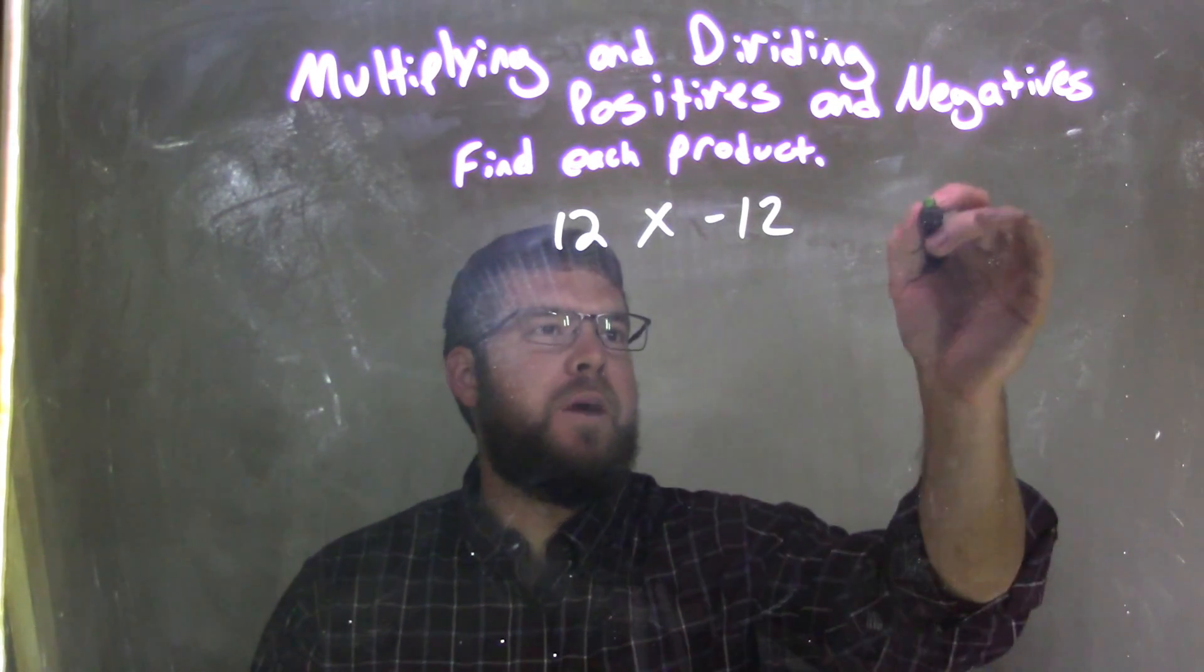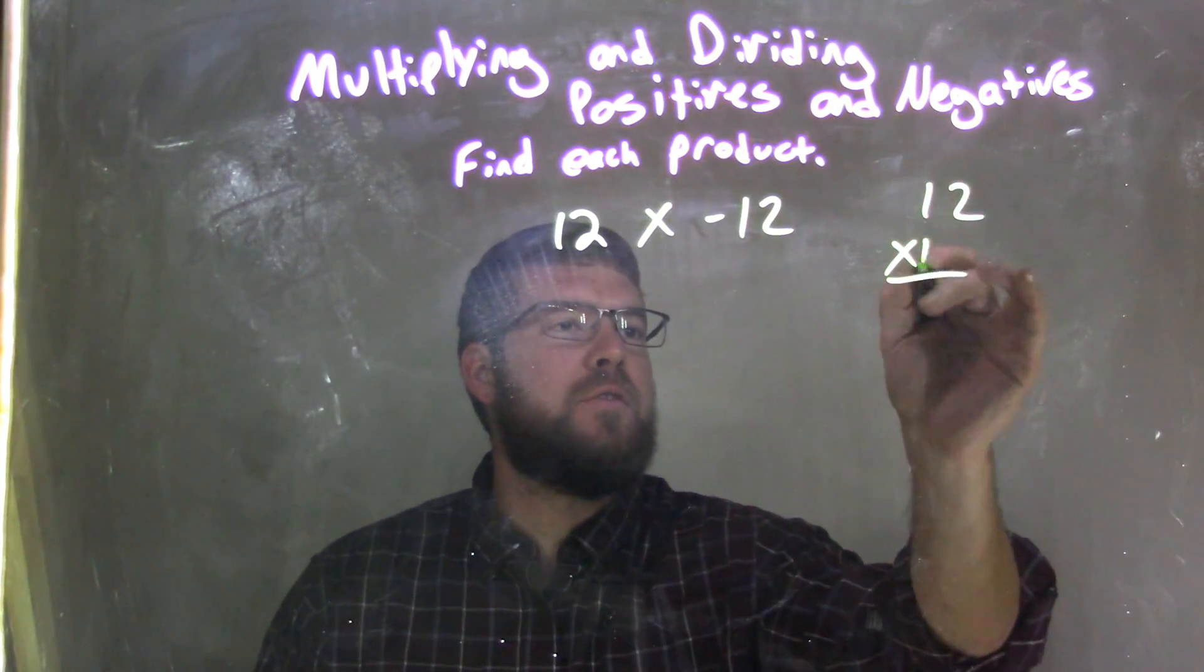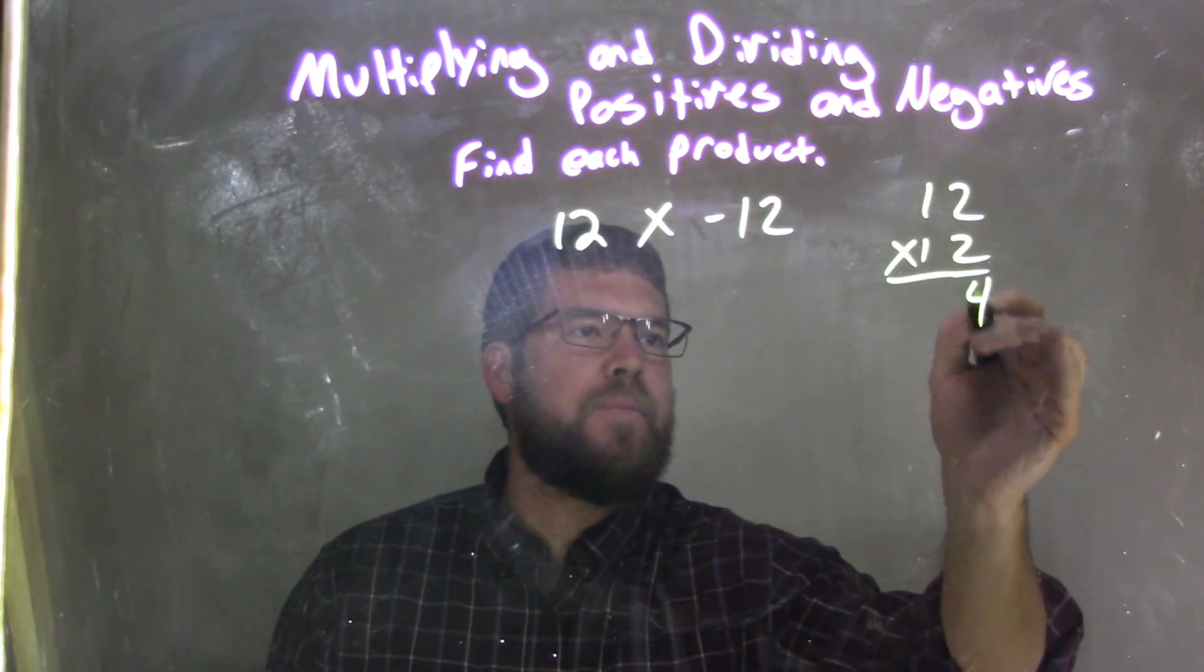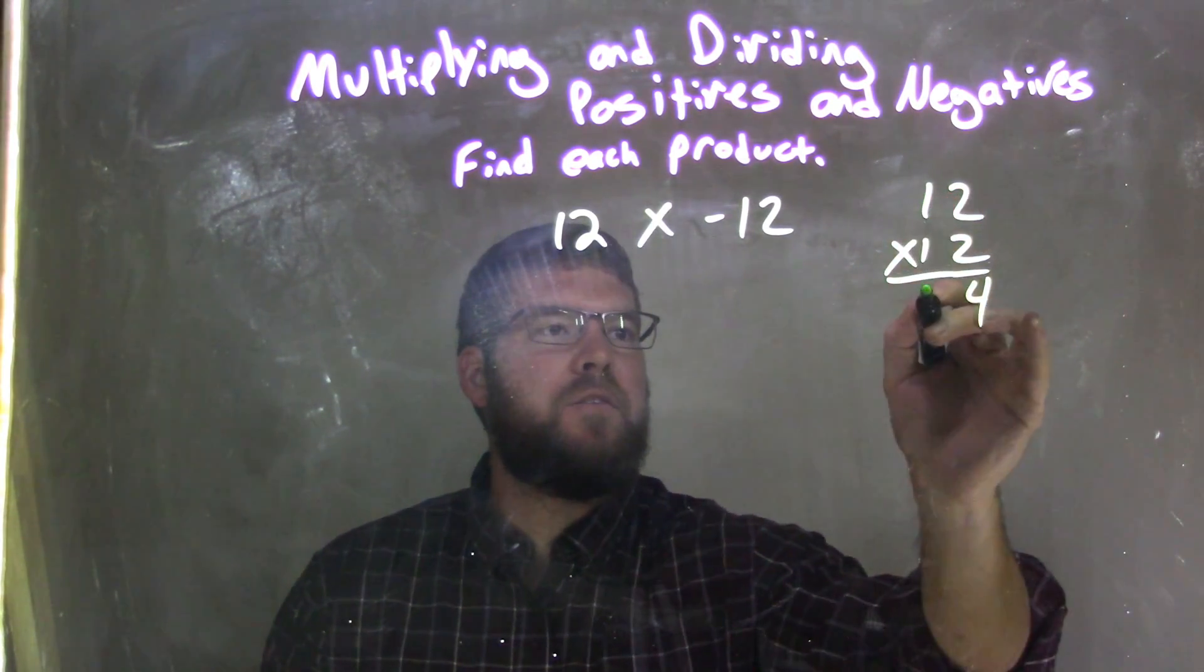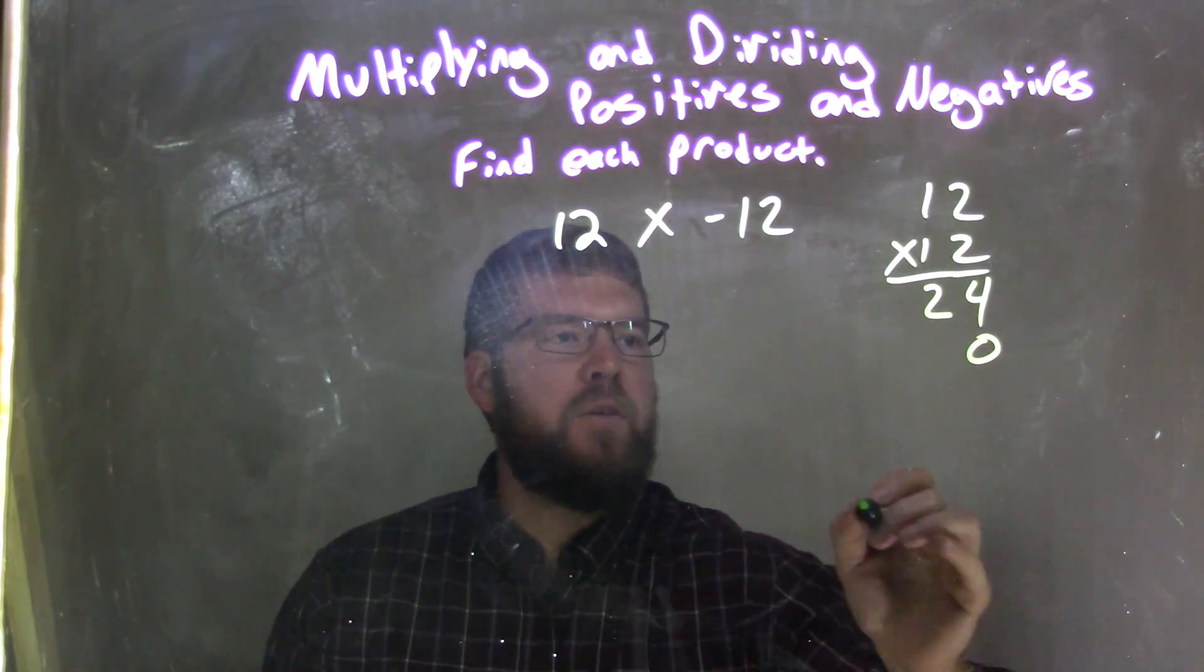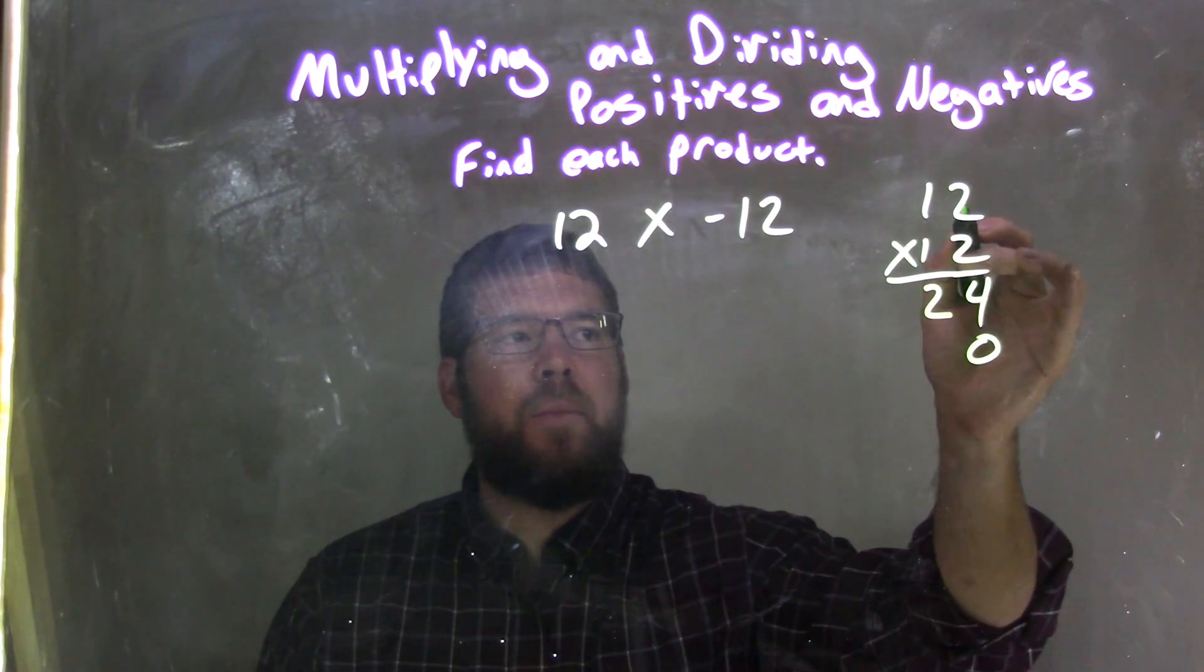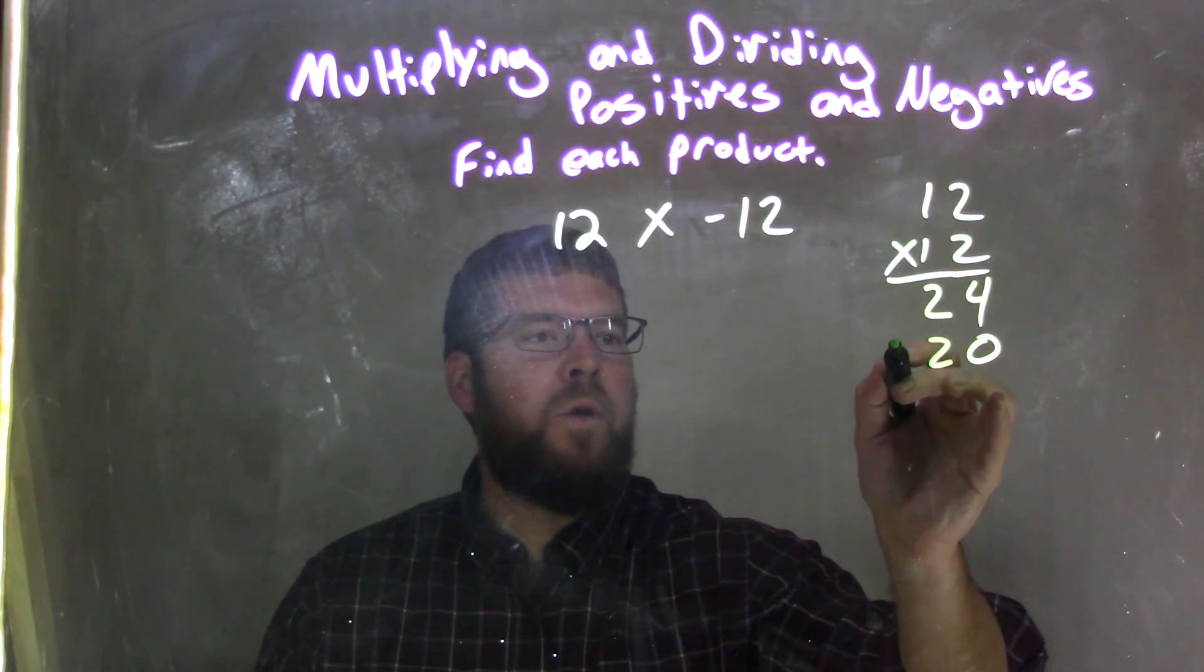But let's use a traditional method. 12 times 12. 2 times 2 is 4, and then 2 times this 1 is 2. We put a place value 0 here because we're on the next digit. Now we have 1 times 2, which is 2. 1 times 1 is 1.